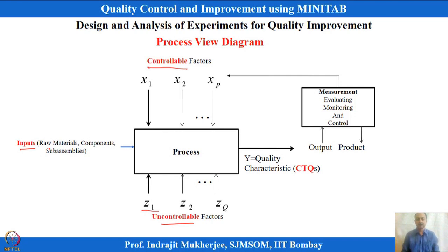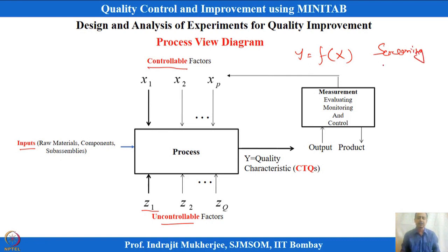We are interested in developing a relationship between factors and the CTQ. This can be used for screening purposes before full-fledged experimentation, or during full-fledged experimentation to develop a response surface or functional relationship between y and x. Either for screening—to screen the variables—or to develop a full function and optimize it. We are more interested in controllable factors and how to control them so that we get the best CTQ conditions, meaning the output should be optimized.